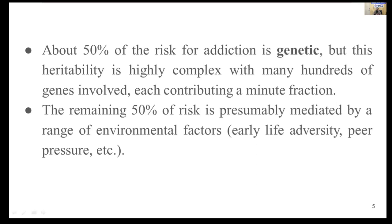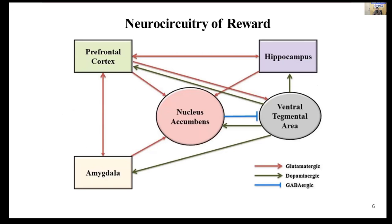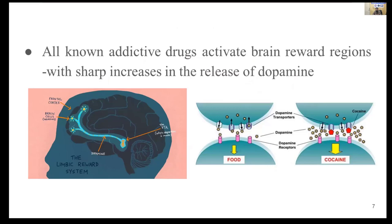Here is the neurocircuitry of the reward pathway. The prefrontal cortex is there, the midbrain ventral tegmental area is there, and then the limbic system — amygdala, nucleus accumbens, and hippocampus. The ventral tegmental area gives dopaminergic nerve endings to the further reward pathway circuitry. The prefrontal cortex is involved with glutamatergic projections, and the nucleus accumbens gives GABAergic projections.